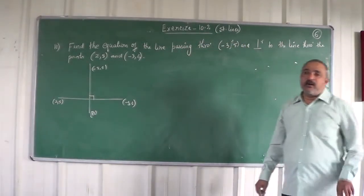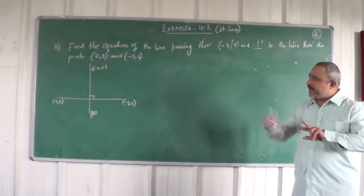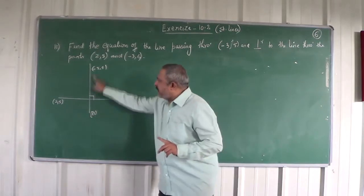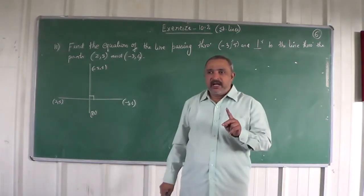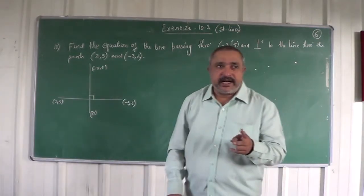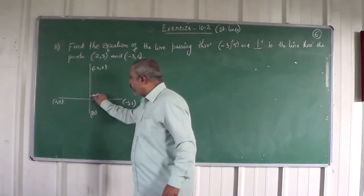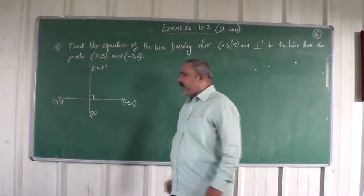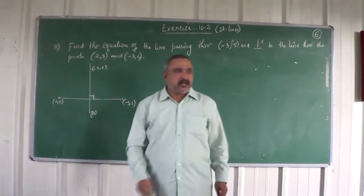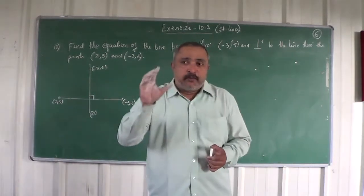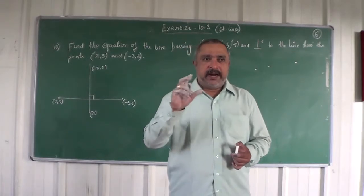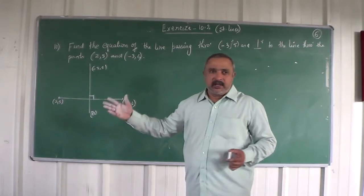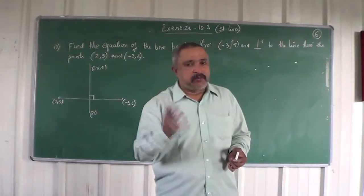What are the characteristics of the required line? Number 1: it is passing through (-3, 5). The required line passes through (-3, 5). And the second characteristic is that it is perpendicular to the line joining (2, 5) and (-3, 6). Now, this is the most important problem because the principle involved in solving this problem is utilized for many other problems.